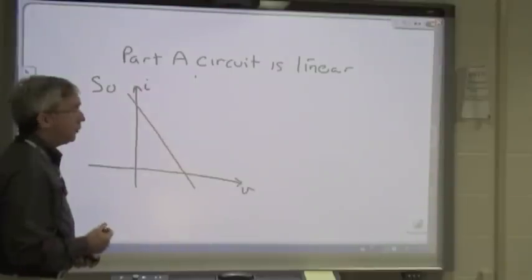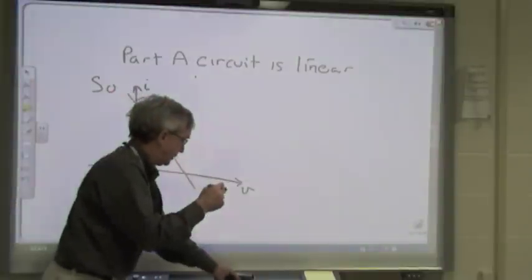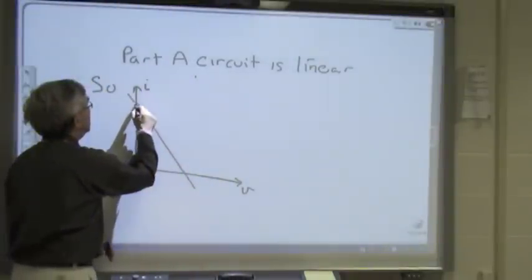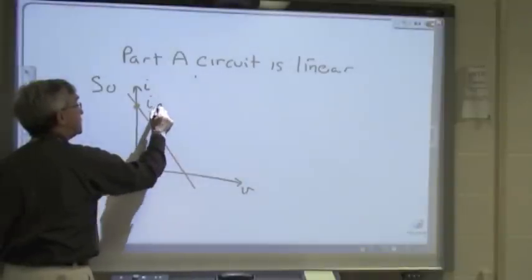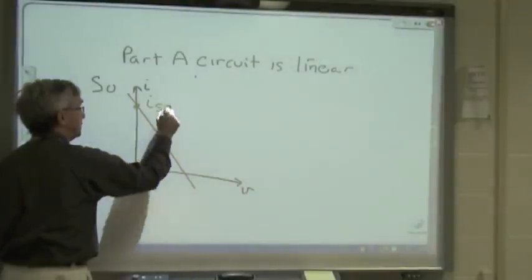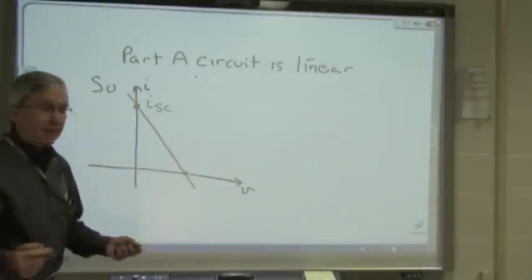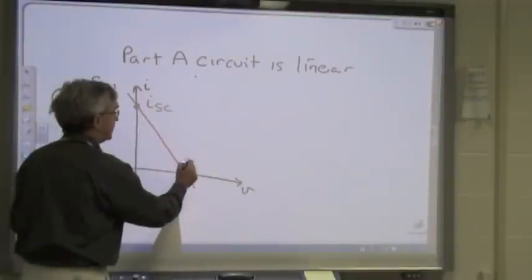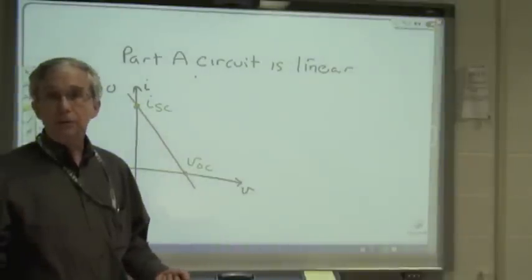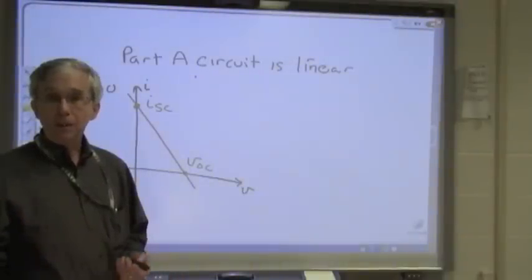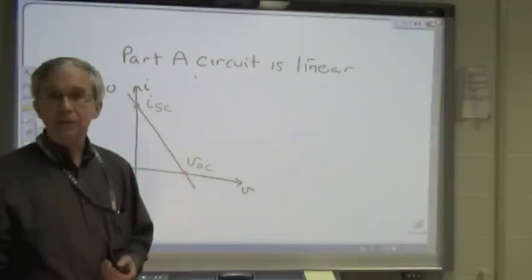Two points make a straight line. Suppose we focus on the point where the voltage is equal to zero — we can call that I short circuit. And let's look at the point where I is equal to zero — let's call that V open circuit. That will be known for circuit A. Now, what about the Thevenin equivalent? Let's insert that into the picture, with V sub T and R sub T.